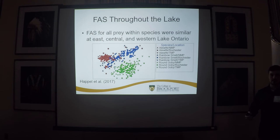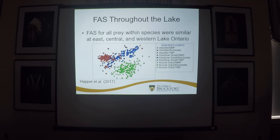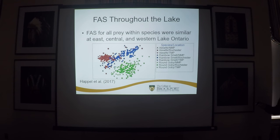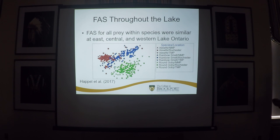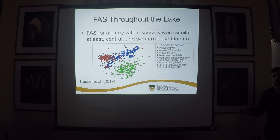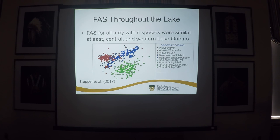Another application of fatty acids is determining differences in species diet based on location within the system. This is taken from Happel et al., using the same analyses done in our lab. That study looked at variation at three different points of Lake Ontario: the eastern point at Nine Mile Point, central Lake Ontario around Rochester, and western at Thirty Mile Point. You can see that groups are separating by species, not location, showing that throughout the lake individual species have consistent fatty acid signatures and consistent diets.